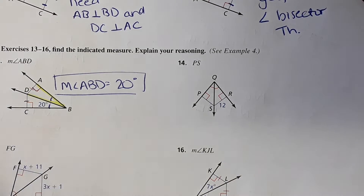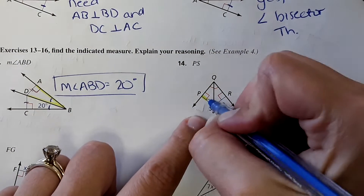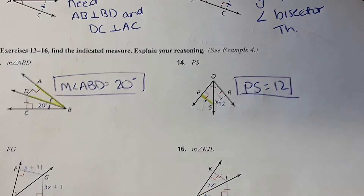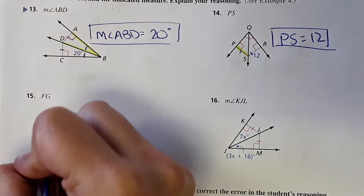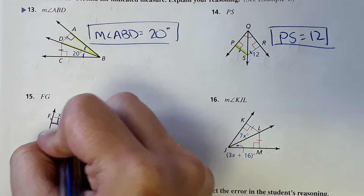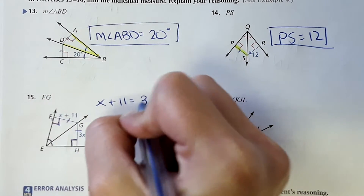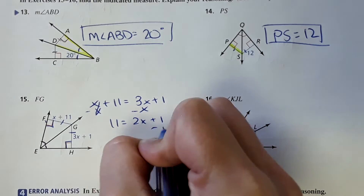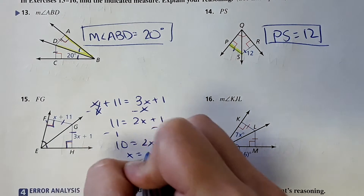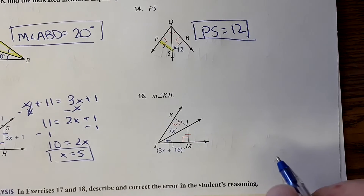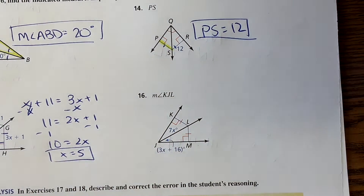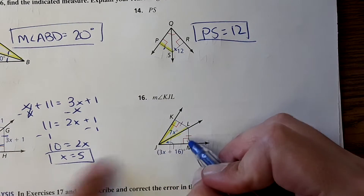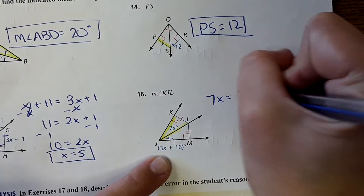Number 14 wants to know the length of PS right here. Again, angles are the same, perpendicular — so therefore this is equal to this. So PS equals 12. And number 15 brought in some math — two conditions are met, so we can say this is equal to this and solve for x. Because these two conditions are met, these angles are equal, so 7x equals 3x plus 16.